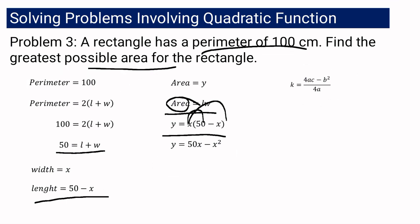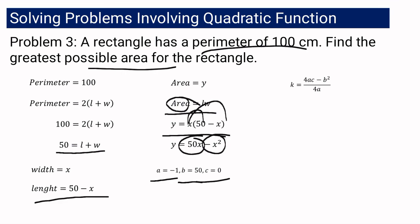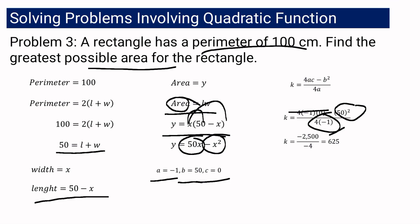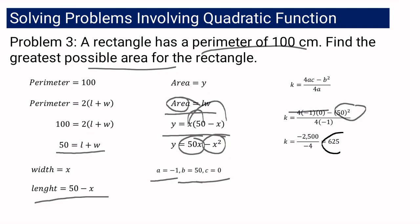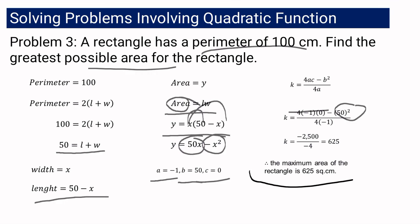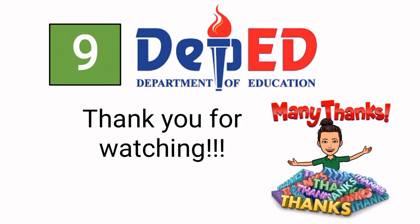Substituting into K equals (4AC minus B squared) over 4A: 4AC becomes 0, so we have negative 50 squared over 4 times negative 1. That is negative 2,500 divided by negative 4, which equals 625. Therefore, the maximum area of the rectangle is 625 square centimeters. That completes all three illustrative examples and all competencies for quarter 1. Congratulations! I hope everything is clear. Thank you for watching!